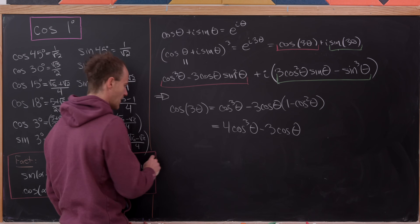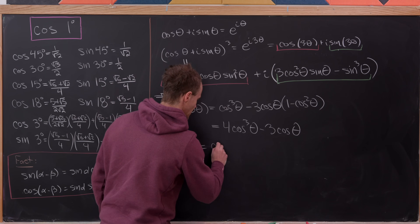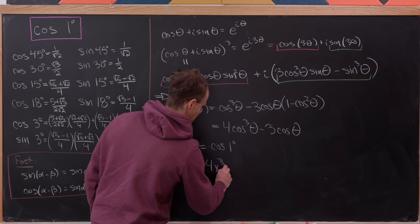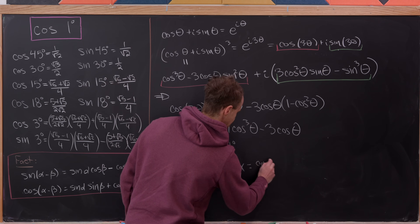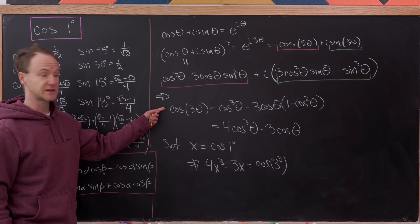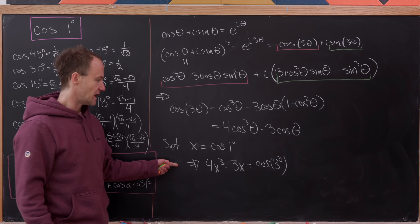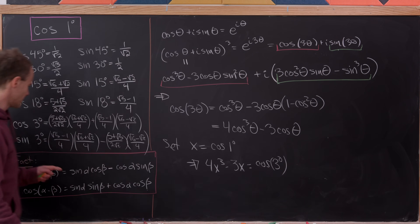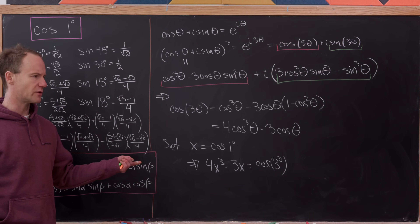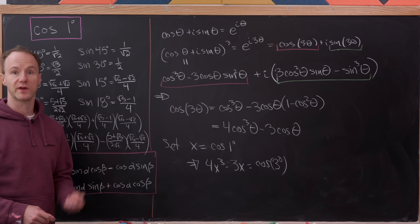Now if we set x equal to the cosine of 1 degree, then 4x cubed minus 3x equals the cosine of 3 degrees. So we have a cubic equation involving a number we know — it's pretty gnarly, but we know it — and we can solve this with the cubic formula.